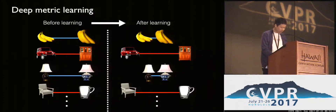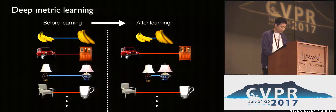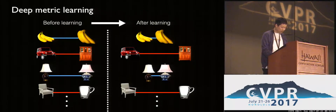Most modern deep metric learning approaches first prepare batches of labeled pairs of data and enforce a local loss function to pull similar examples toward each other and push dissimilar examples further apart in the embedding space. However, these approaches suffer from the discrepancy between the training objective and the actual evaluation metrics used in tasks such as clustering and retrieval.